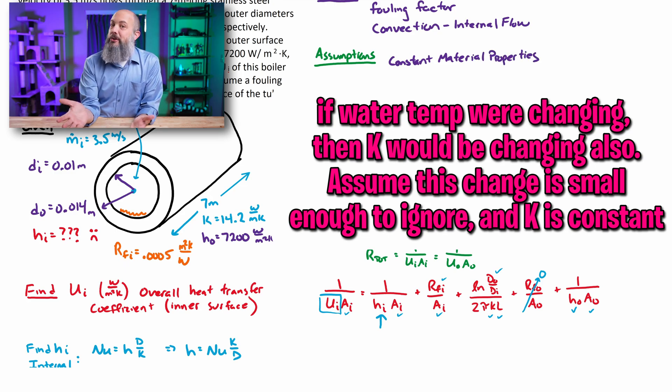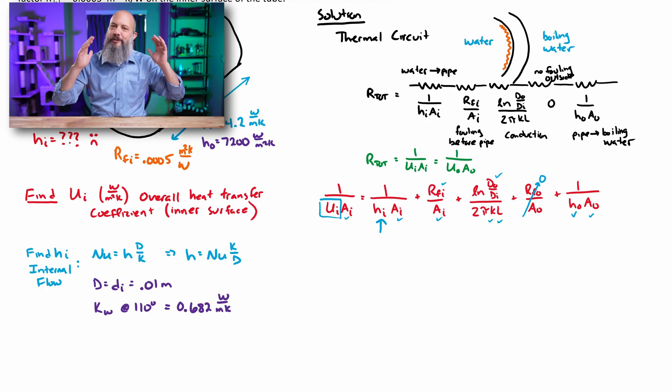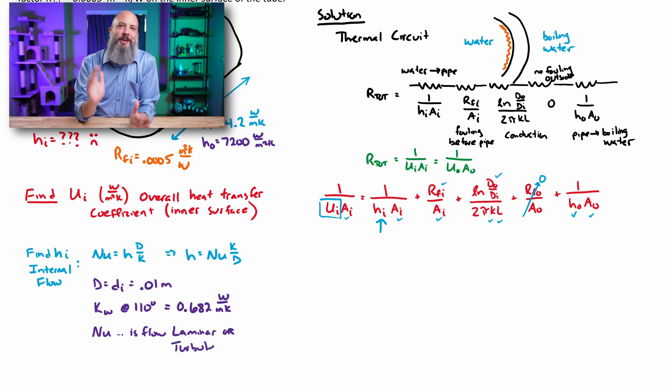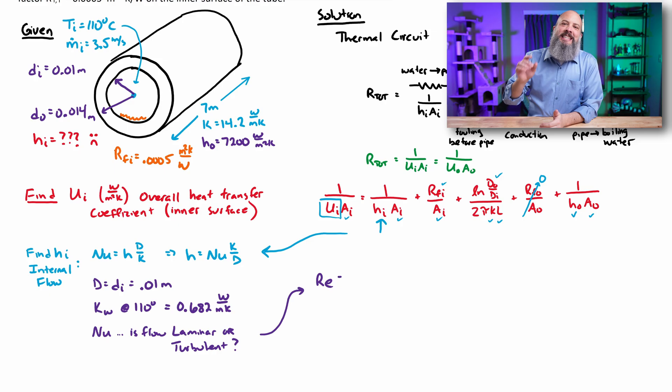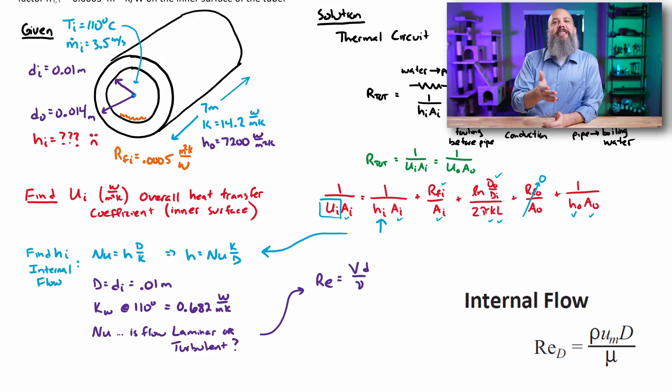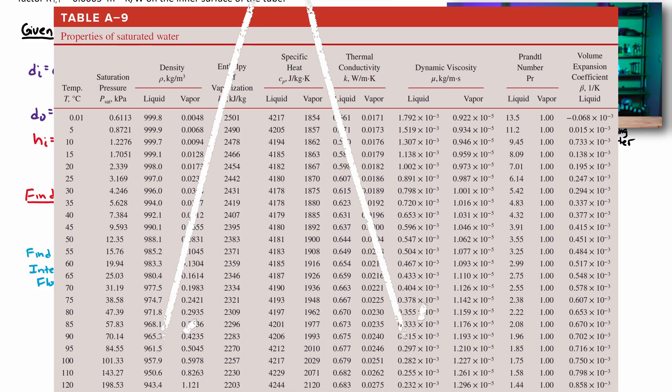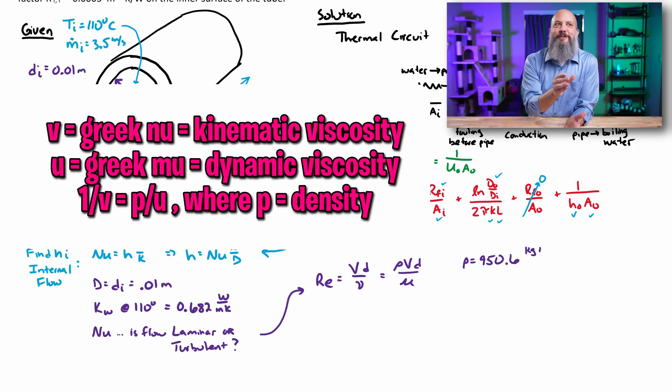To get the Nusselt number, we have to determine, is the flow laminar or turbulent? There's different equations for Nusselt number for internal flow, laminar versus turbulent. We find out laminar or turbulent using the Reynolds number V·D over nu. Today, I'm going to use rho·V·D over mu, where rho over mu is equal to 1 over nu. I'm just using that because the tables that I'm looking at today don't actually have nu in them. It only has mu. So I have to look up both of these.